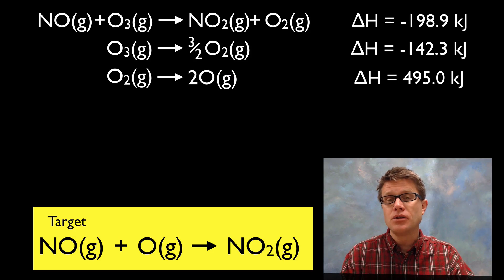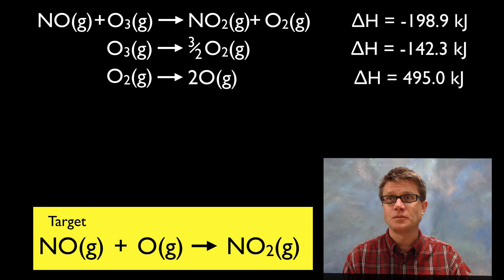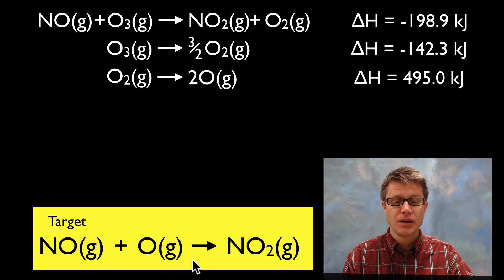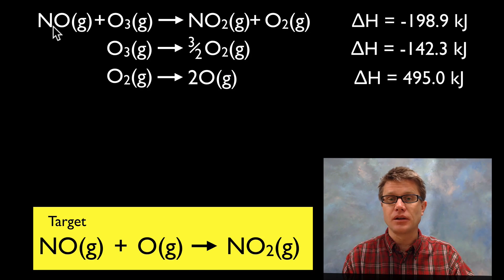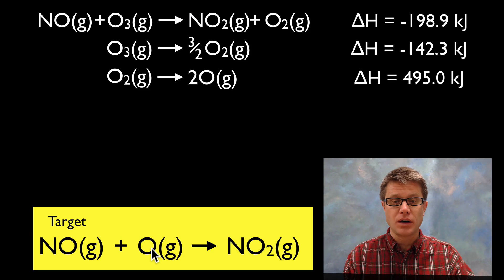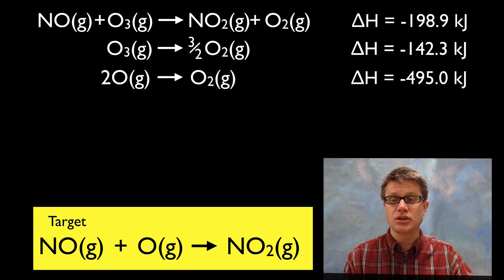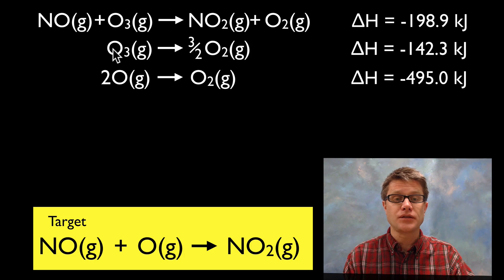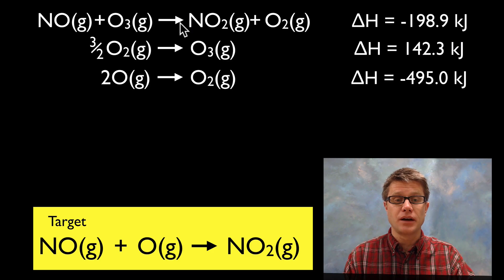Let's try a slightly harder one — you could pause the video and try this on your own. Here's our target equation. I have my NO (nitrogen monoxide) on the left side, which is good, so I'll leave that. But I really want my oxygen all by itself on the left side, so I'm going to turn one equation around — there's already a negative value there, which helps. I can also see two ozones on the left side, and if I switch another equation around those are going to cancel out.